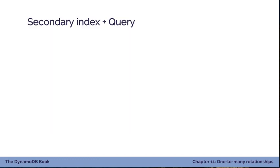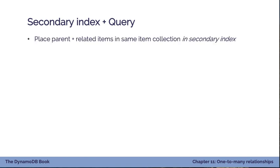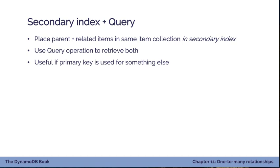To summarize Strategy 4: you're placing the parent and related items in the same item collection, but in a secondary index rather than the base table primary key. You use the query operation to retrieve both in one request, just like Strategy 3. This is useful when the primary key is already being used for something else — a different access pattern, uniqueness, or another purpose. If your primary key is busy, put this into a secondary index and you can still handle the same pattern.